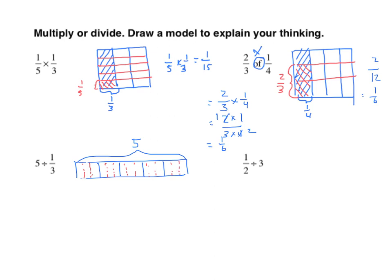If I count how many thirds I have in here, I can count: one, two, three, four, five, six, seven, eight, nine, ten, eleven, twelve, thirteen, fourteen, fifteen. And again, we can use the algorithm: five divided by one-third equals five times three equals fifteen.